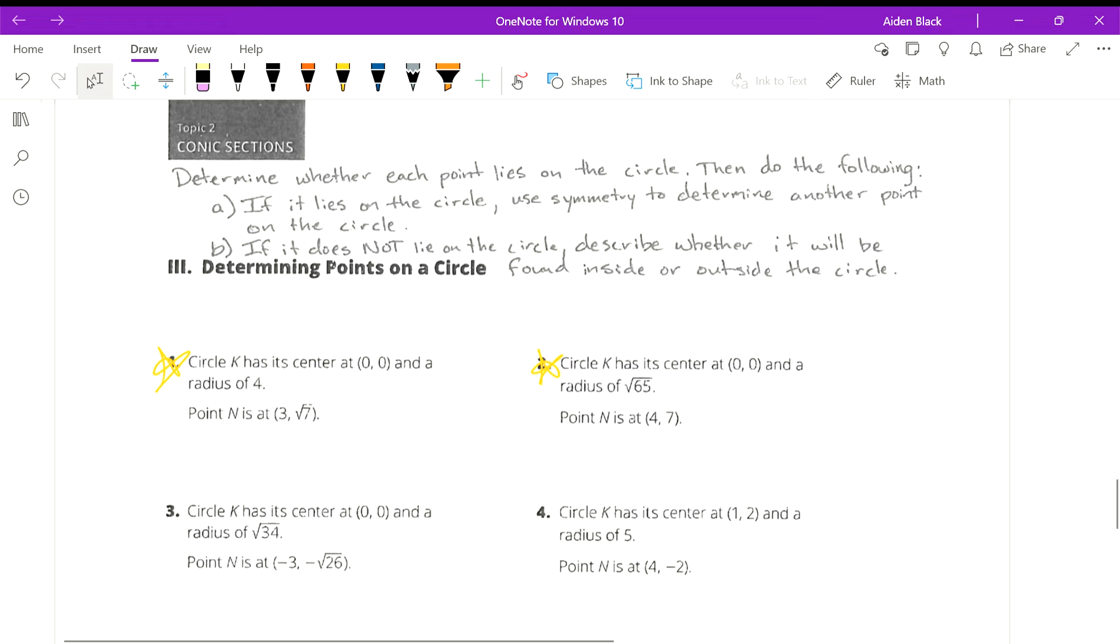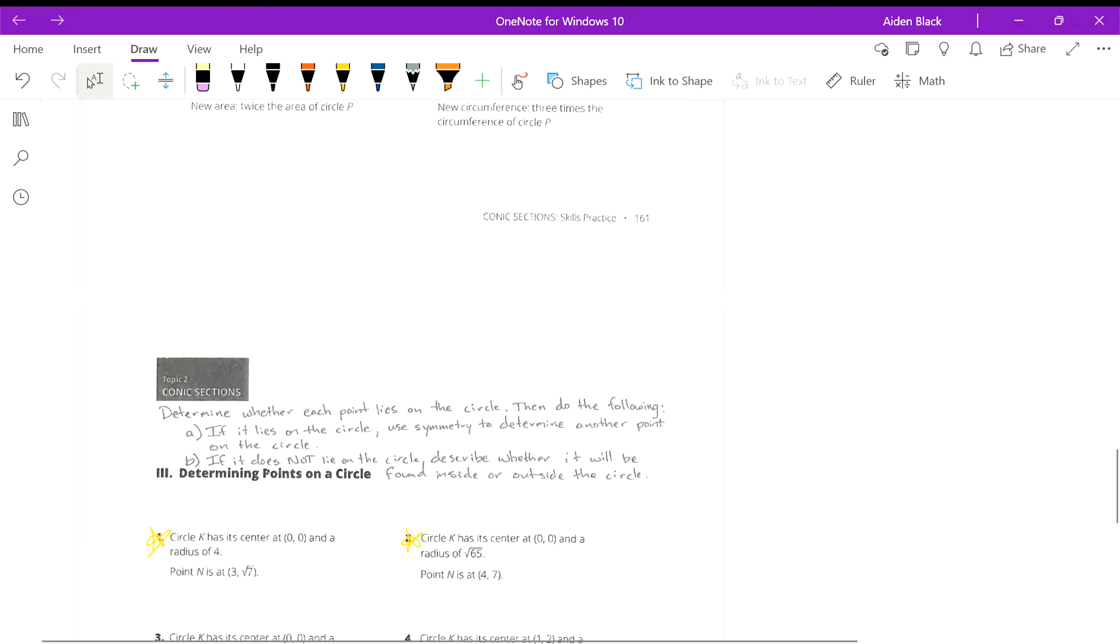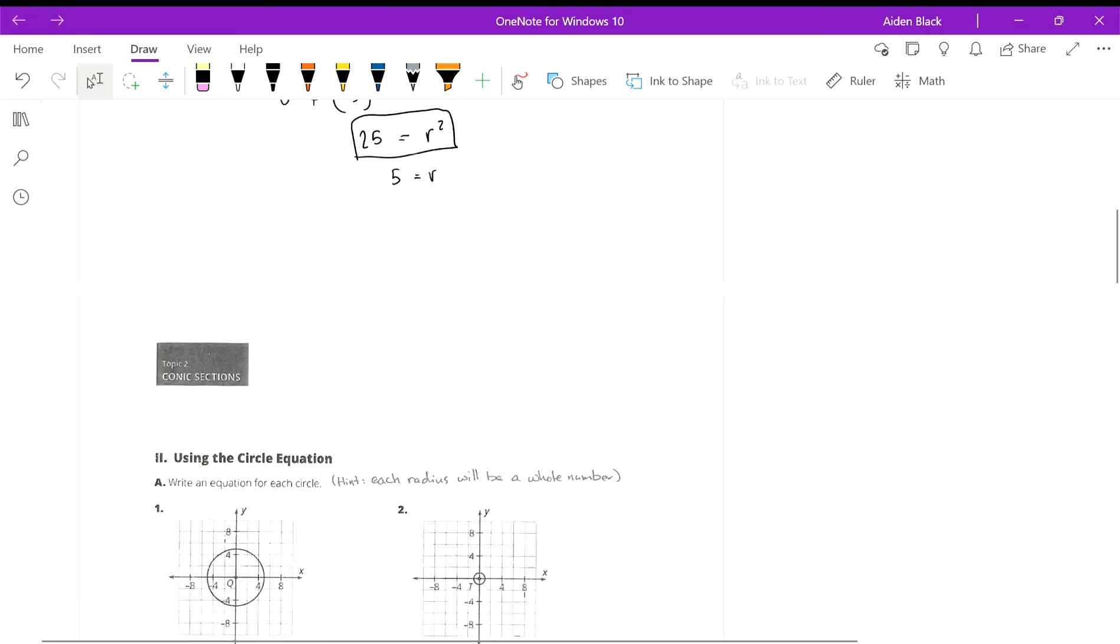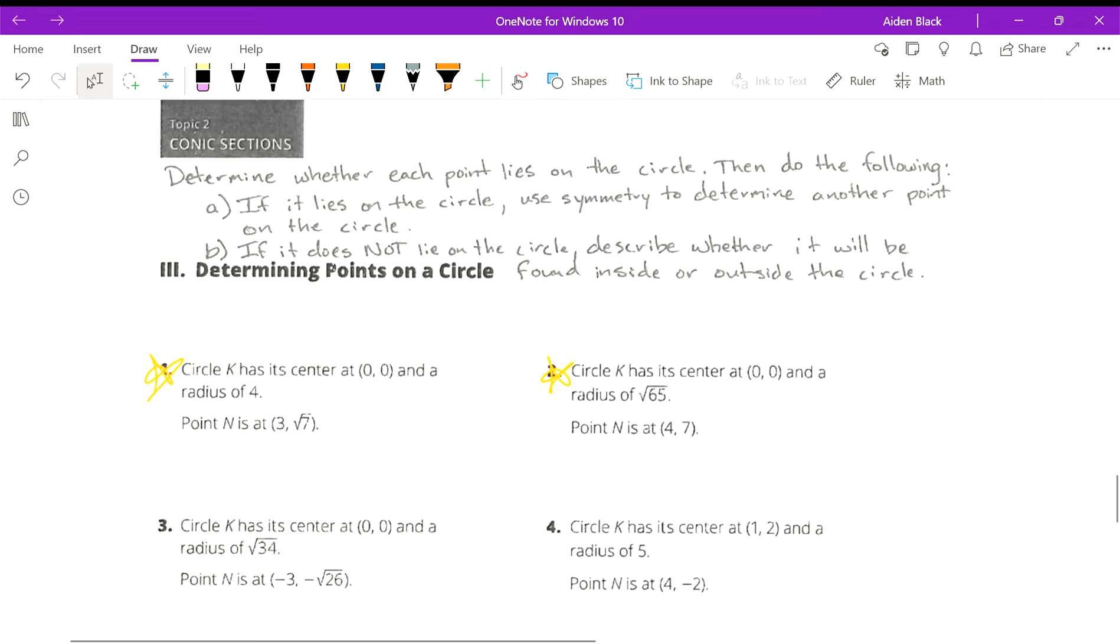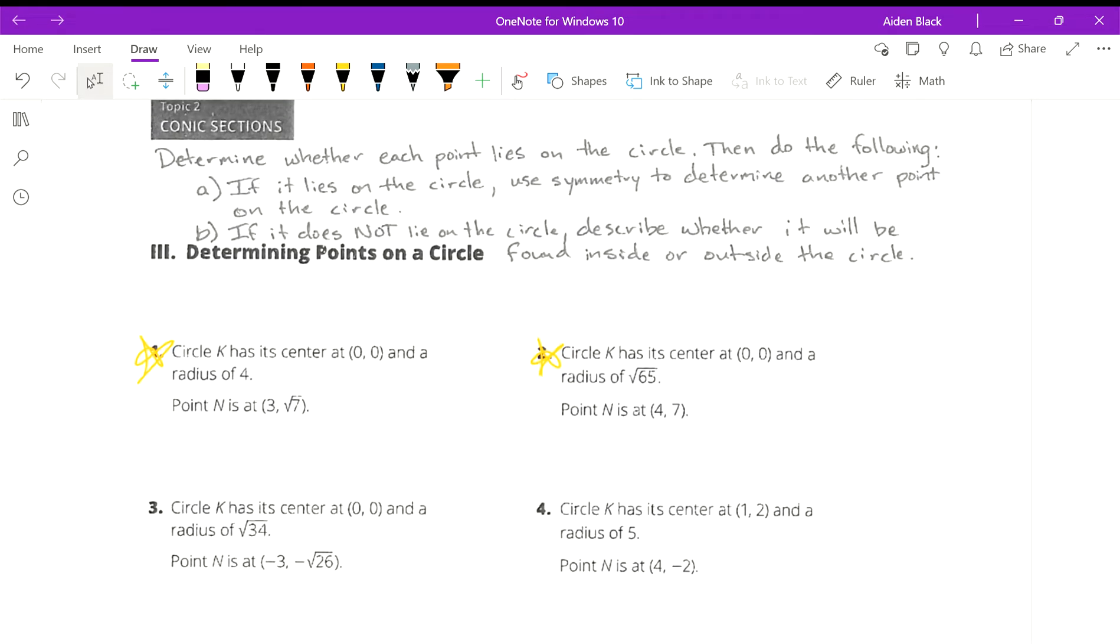Alright, let's work on the final page of the review. We're asked to determine whether each point lies on the circle, then do the following: If it lies on the circle, use symmetry to determine another point on the circle. But if it does not lie in the circle, describe whether it will be found inside or outside the circle.